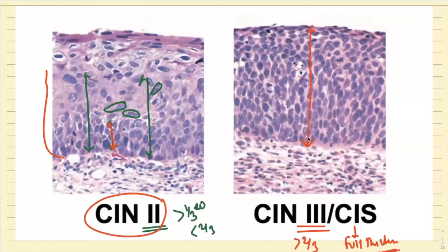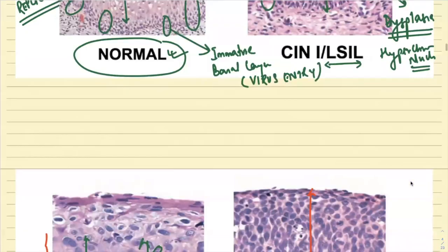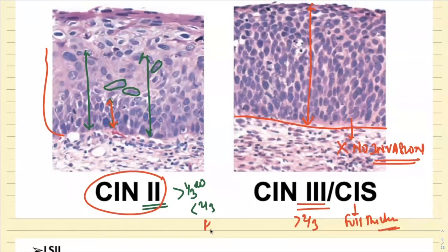Why are they called precursor lesions? The basement membrane is intact — there is no invasion. Till there is no invasion, they will be regarded as precursor lesions. SYN1 is called L-CIL, and all of SYN2, SYN3, and carcinoma in situ are called H-CIL because their treatment remains the same.